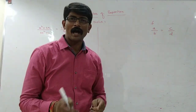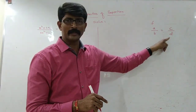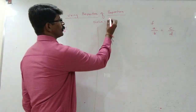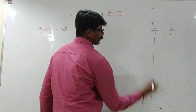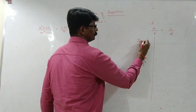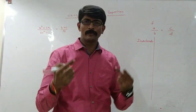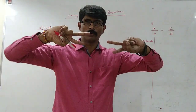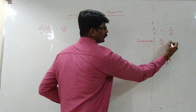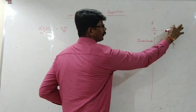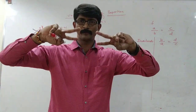A, B, C, D are said to be in proportion if A upon B is equal to C upon D. That is the meaning of proportion. Now the first property is Invertendo. In Invertendo, what do we do? We reciprocal both the sides — meaning B upon A will become equal to D upon C. So this is called Invertendo: we reciprocal both sides.